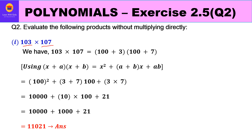Let us take the first part: we have to find the product of 103 and 107. Now, 103 can be written as 100 plus 3, and 107 can be written as 100 plus 7, because the square of 100 is convenient to work with. If we compare this with Identity 5, which says the product of (x + a)(x + b) equals x² + (a + b)x + ab, we can match our factors.